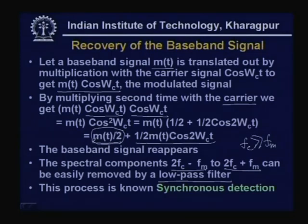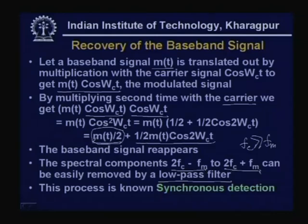The frequency components at 2f_c − f_m and 2f_c + f_m can be very easily removed by using a low-pass filter, since f_c is much greater than f_m. After low-pass filtering, you get back only the baseband signal. This approach is known as synchronous detection: you multiply the modulated signal a second time with the carrier and filter out the high-frequency components to recover the baseband signal.